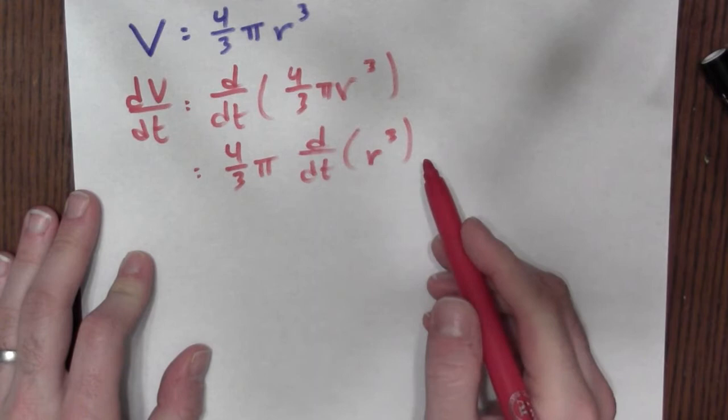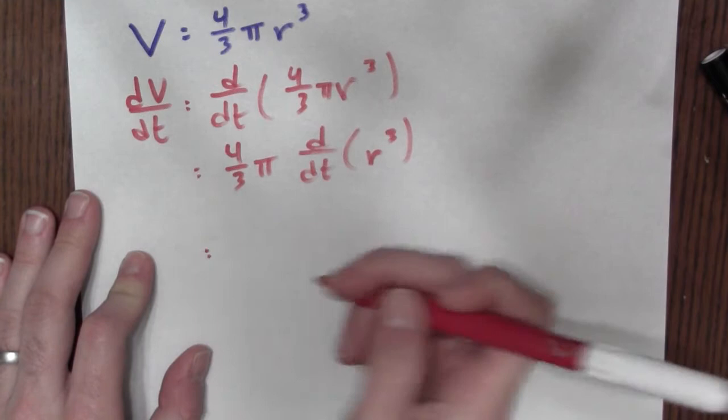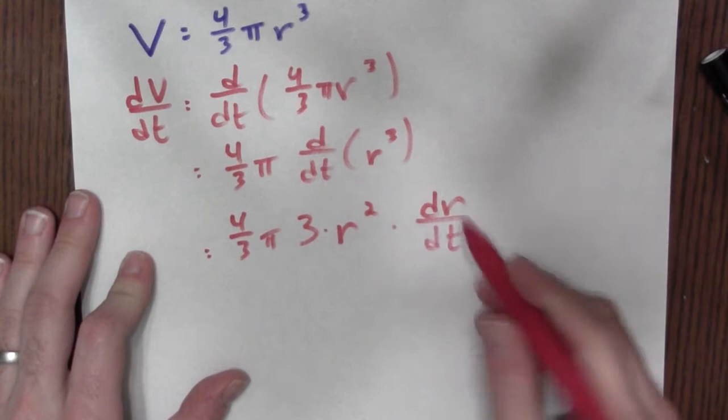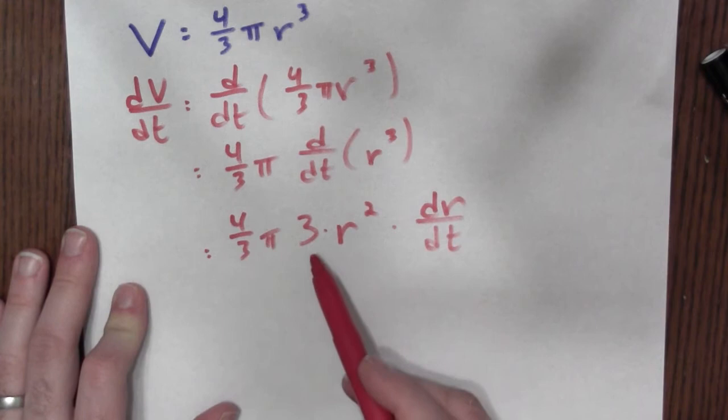To figure out the time derivative of r³, I'm regarding r as a function of t, so I use the chain rule. The derivative of cubing is 3 times the inside function squared times the derivative of the inside function, so dr/dt. Therefore, dV/dt = 4/3 π × 3 × r² × dr/dt.